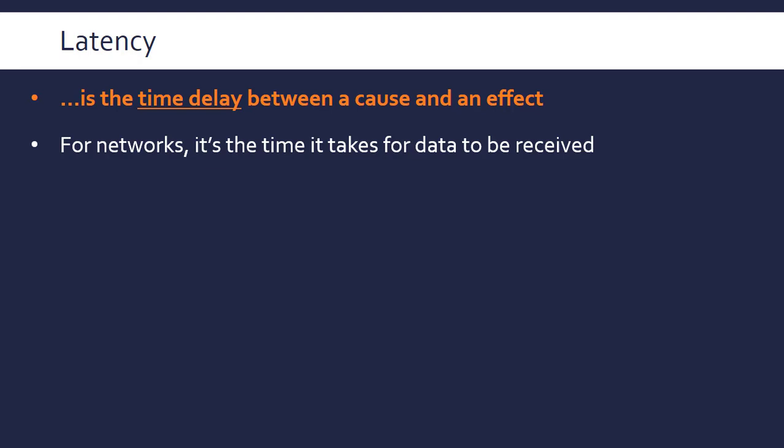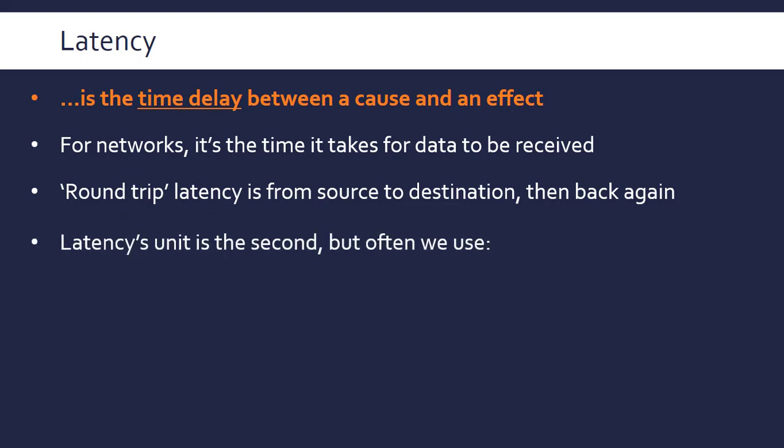Latency is another measure of speed. We often talk about round-trip latency, which is the measurement of all the time from the source to the destination and then back again. This is because lots of messages go back and forth on networks. It's the total elapsed time, this round-trip latency.